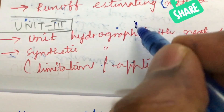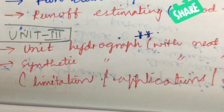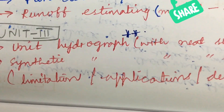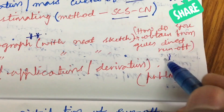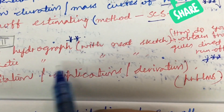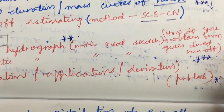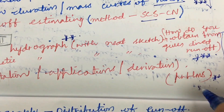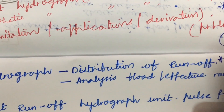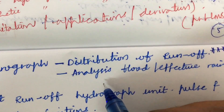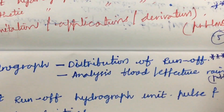In Unit 3, the very important gunshot question is related to the hydrograph — specifically the unit hydrograph and methods of deriving it with a neat sketch, and how to obtain the hydrograph from a given direct runoff. This is a very important gunshot question. Synthetic hydrograph and the limitations, applications of the hydrograph, along with certain derivations and problems, may be the fifth question in the examination. The distribution of runoff from a hydrograph is also a very important question, and analysis of flood, effective rainfall, and problems based on these should be worked out and practiced.